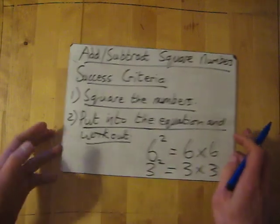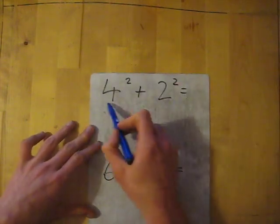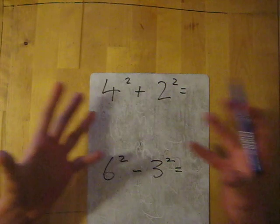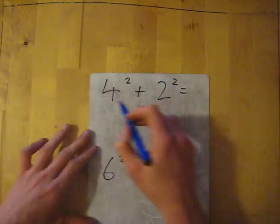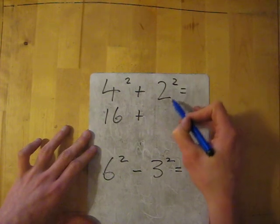So we'll do a couple of examples. We've got 4 squared add 2 squared. So we do 4 squared and 2 squared and then add the two answers together. 4 squared is 4 times 4 which is 16, add 2 squared which is 2 times 2 which is 4, and then add them together which gives me 20.